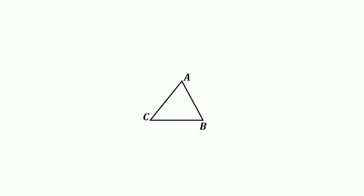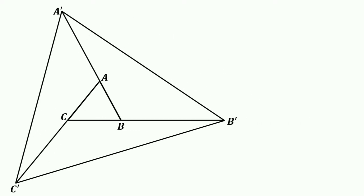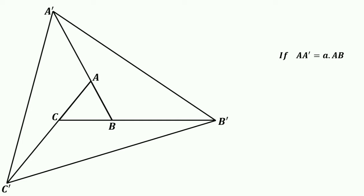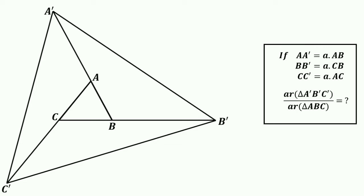Today's question: given triangle ABC, extend line BA to A', extend line CB to B', and extend line AC to C'. Join the extended points to form a new triangle. If AA' = a·AB, BB' = a·CB, and CC' = a·AC, where a is a constant, what is the ratio of the area of triangle A'B'C' to the area of triangle ABC?